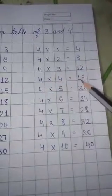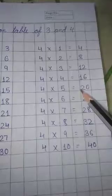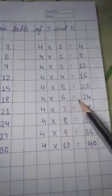Now, come to the multiplication table of 4. 4×1 is 4. 4×2 is 8. 4×3 is 12. 4×4 is 16. 4×5 is 20. 4×6 is 24.